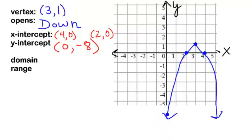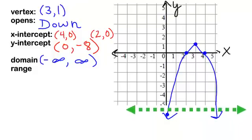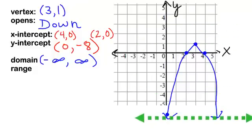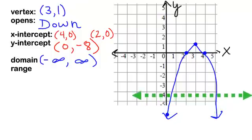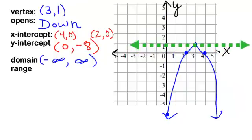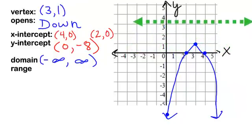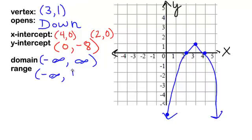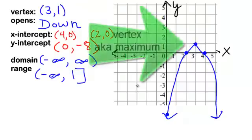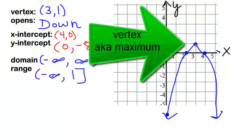This parabola is going to go on and on in both directions, so the domain is going to be negative infinity to positive infinity. For the range — notice if I'm coming from negative infinity, the range goes from the bottom to the top. My graph is down here in all these negative y's until 1. As the y's get larger — 2, 3, 4 — my graph is not part of the picture. So my range will be negative infinity up until when the y is 1. I will draw a bracket because it does include 1, and that is the maximum value of our graph.